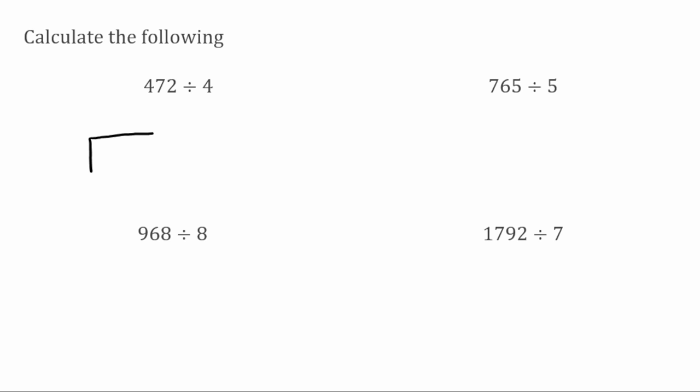For this first question we've got 472 divided by 4. 4 fits into 4 once exactly with no remainder, so I move straight over to the next digit. 4 fits into 7 once because 1 times 4 is 4, leaving a remainder of 3. Bringing that over I've now got 32. 4 fits into 32 eight times because 8 times 4 is 32 exactly. So our answer is 118.